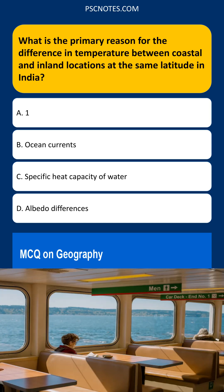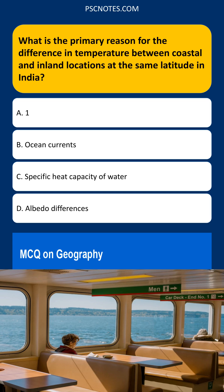What is the primary reason for the difference in temperature between coastal and inland locations at the same latitude in India? The answer is the Specific Heat Capacity of Water — this is the primary reason.